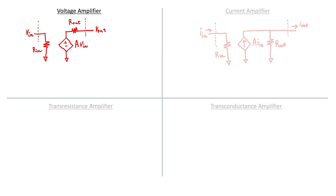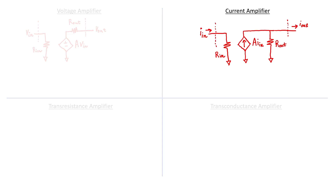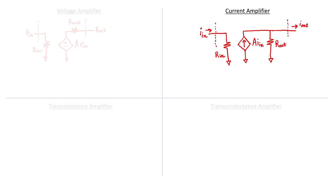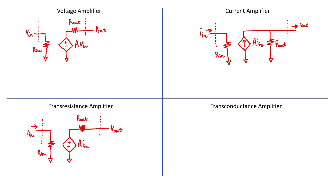With a voltage amplifier, it's desirable to have a high input impedance. With a current amplifier, it's desirable to have a low input impedance. With a voltage amplifier, it's desirable to have a small output impedance. With a current amplifier, it's desirable to have a high output impedance.